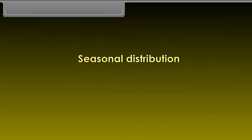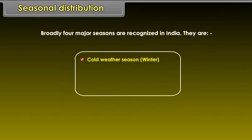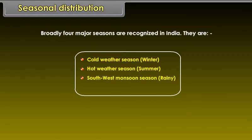Broadly, four major seasons are recognized in India. They are: cold weather season (winter), hot weather season (summer), southwest monsoon season (rainy), and the season of retreating monsoon.